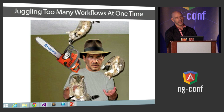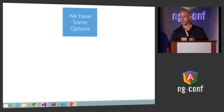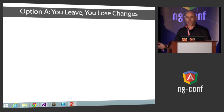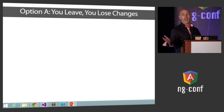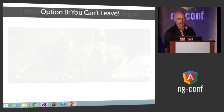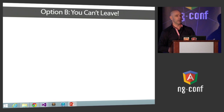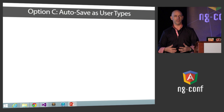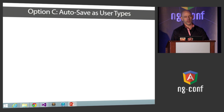So juggling these tasks is important — we need to make sure we're not juggling chainsaws and kittens. How do we handle these saving situations? There are options — good ones and not so good ones. Option A: let the user leave and lose all their changes — users love that. Option B: don't let them leave that screen until everything has been entered and saved or canceled. Option C: automatically save everything as you're typing using some kind of throttling.